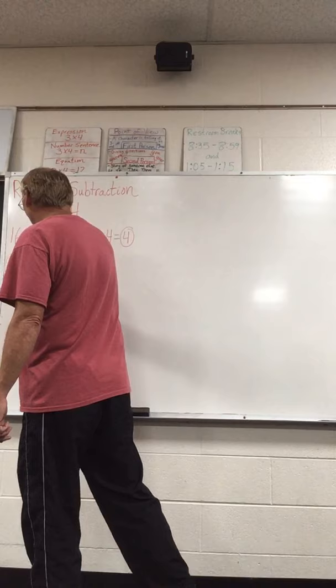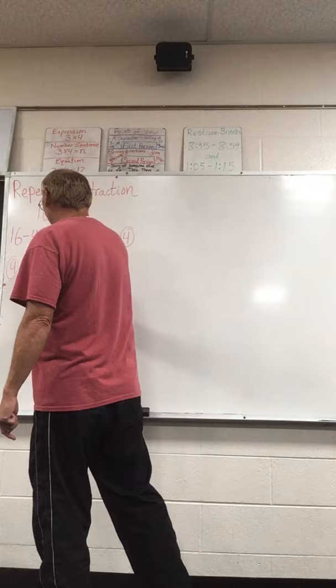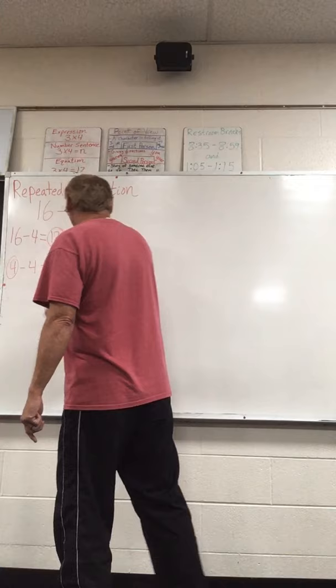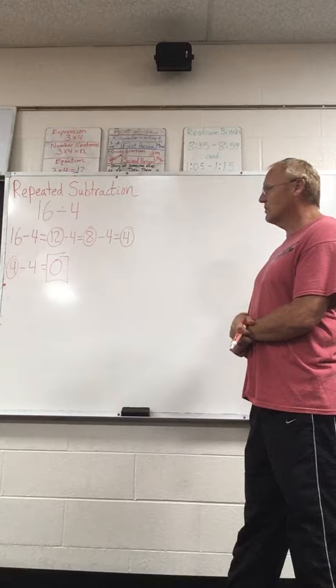I'm going to carry it down here so you can see it better. We're at 4 — we're not to 0 yet, so we keep going. So then we do minus 4, and that's going to give us 0. That's what we want to get to — 0 ultimately. So you count how many times you subtracted, and that's going to tell you what your answer is.